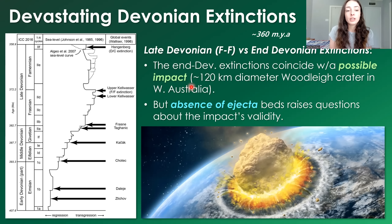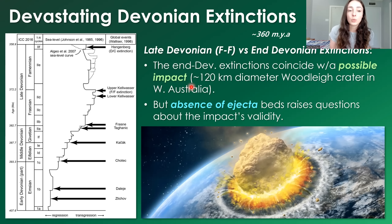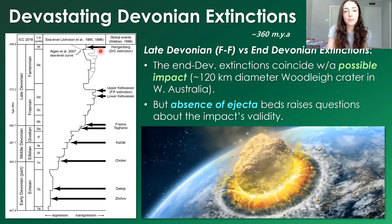The end-Devonian extinctions coincide with a possible impact around 120 kilometers in diameter in Western Australia, but the absence of ejecta beds raises questions regarding its validity. Regardless, the Devonian is filled with transgressive anoxic pulses that also cause extinction, so it does not necessarily require an impact — just another transgressive anoxic event could have caused this end-Devonian mass extinction, especially given the groups it affected.